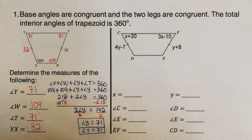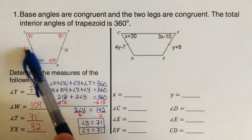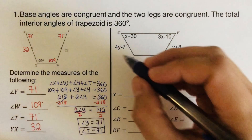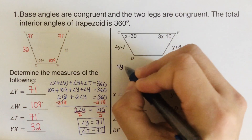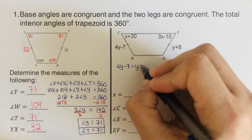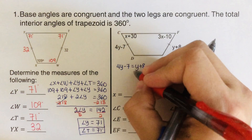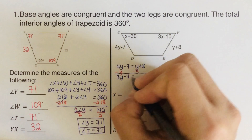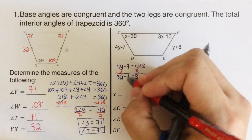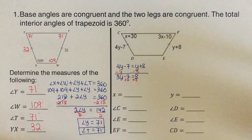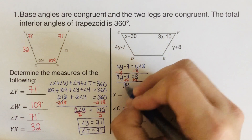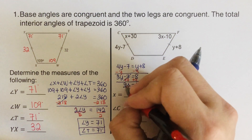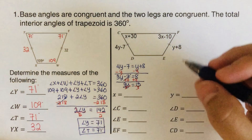We solve for Y first. Since the two legs are congruent, we set them equal: 4y minus 7 equals y plus 8. Subtracting y from both sides gives 3y minus 7 equals 8. Adding 7 to both sides gives 3y equals 15, so y equals 5.